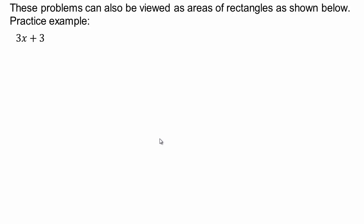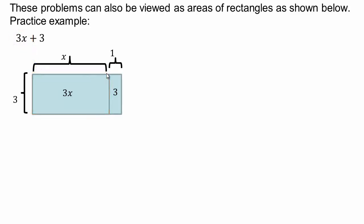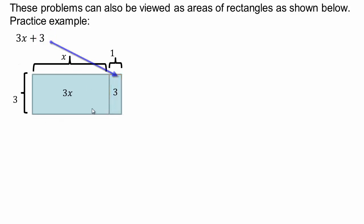So 3x plus 3 — there are two things added together: 3 times x. You can think of how that represents the area of a rectangle with width 3 and length x, so the area is 3 times x. You can think of 3 as 3 times 1, and so 3 times 1 is this little rectangle with length 1 and width 3. So we have 3 times x is one part and 3 times 1 is that part.